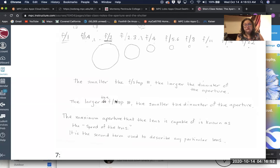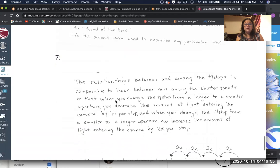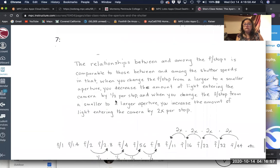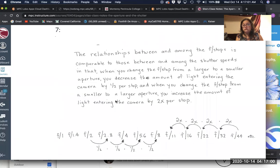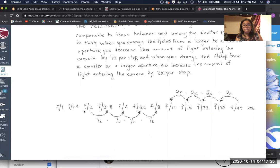Okay, so let's talk about the relationships between and among the f-stops aperture settings, and they are comparable to those between and among the shutter speeds in that when you change the f-stop from a larger to a smaller aperture, you decrease the amount of light entering the camera by one half per stop. And when you change the f-stop from a smaller to a larger aperture, you increase the amount of light entering the camera by two times per stop.